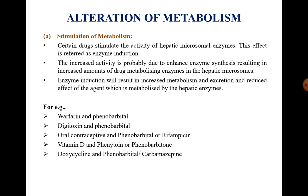For example, warfarin with phenobarbital: phenobarbital increases the rate of metabolism of warfarin, resulting in decreased anticoagulant activity. Next example, digitoxin and phenobarbital: phenobarbital can increase the rate of metabolism of digitoxin. One metabolite of digitoxin is digoxin, another active cardiac glycoside, but its duration of activity is shorter than that of digitoxin. Therefore, it may be necessary to increase the dose of digitoxin.